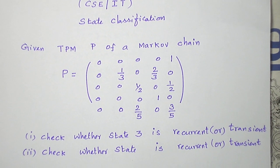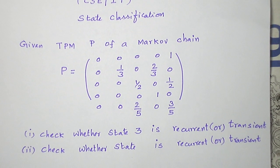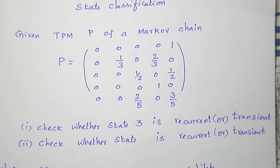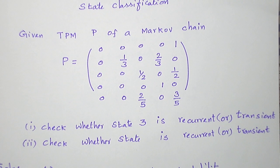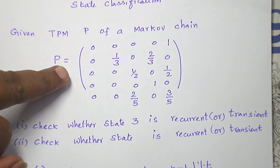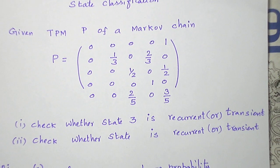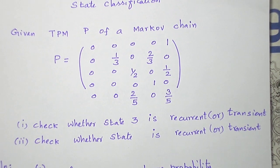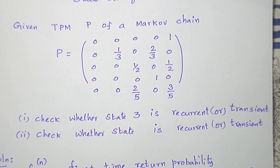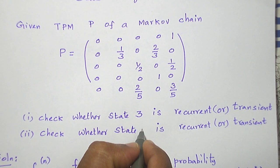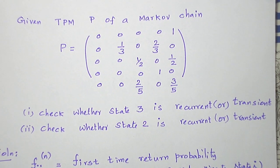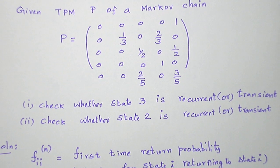Let me read the question. We are given a Markov chain with 5 states, so the transfer probability matrix is a 5 by 5 matrix. We are asked to check whether state 3 and state 2 are recurrent or transient.